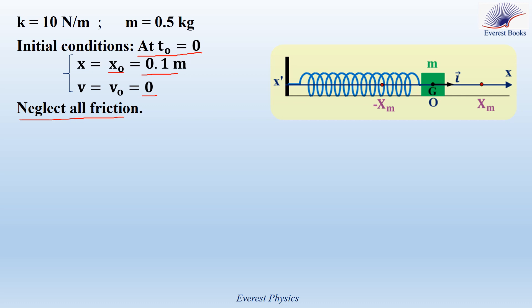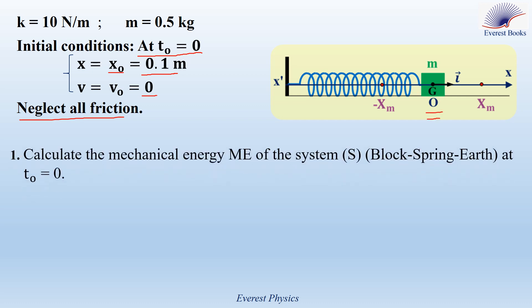Take the horizontal plane containing the center of mass G of the block as a reference level for gravitational potential energy. At equilibrium, G coincides with the origin of the x-axis, as shown on the figure. Part 1: Calculate the mechanical energy of the system S — which is the block, the spring, and the earth — at t₀ equals 0. The expression of ME is: ME equals KE plus GPE plus EPE.